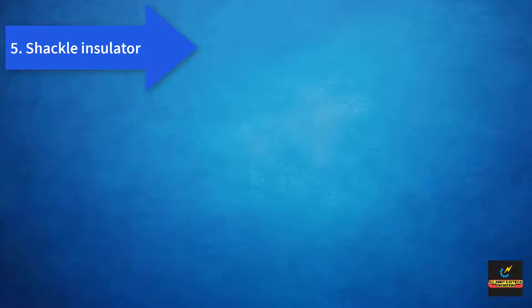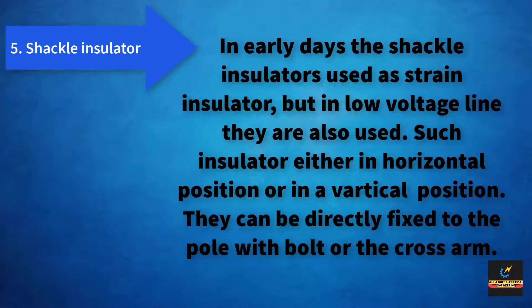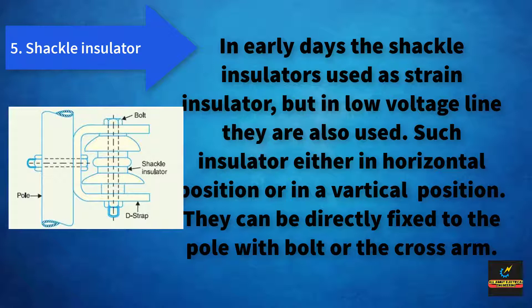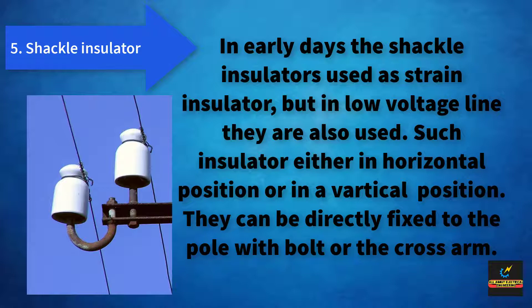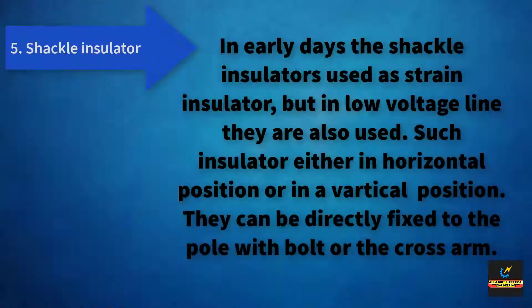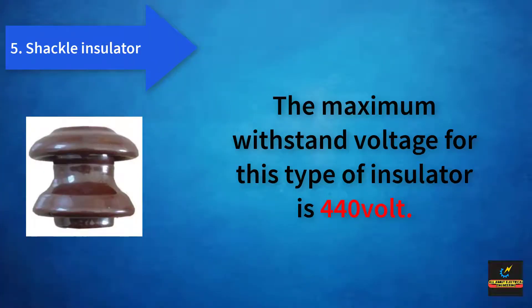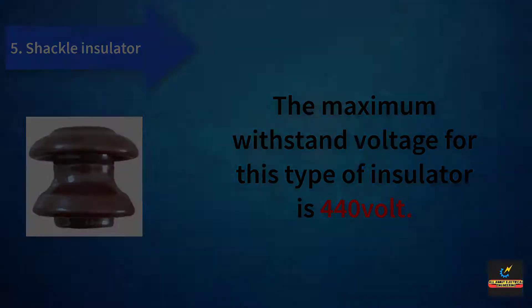Last but not the least, shackle type insulator. In early days, shackle insulators were used as strain insulators. But in low voltage lines, they are also used in either a horizontal position or a vertical position. They can be directly fixed to the pole with a bolt or to the cross arm. The maximum withstand voltage for this type of insulator is 440 volts.